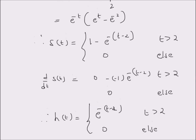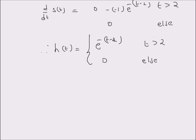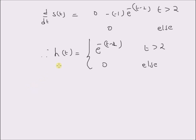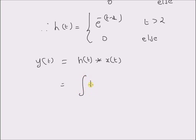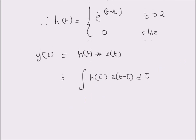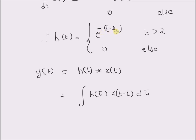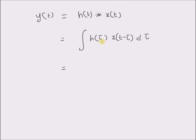By looking at the unit step response we can understand the condition t > 2. Now let us validate this result — we want to verify that using this impulse response gives back the original system equation. For a linear system, y(t) = h(t) * x(t), which by definition equals the integral of h(τ) · x(t-τ) dτ. Since h(τ) = e^(-(τ-2)) for τ > 2, the limits become 2 to infinity.